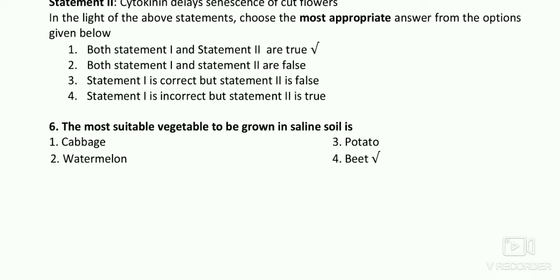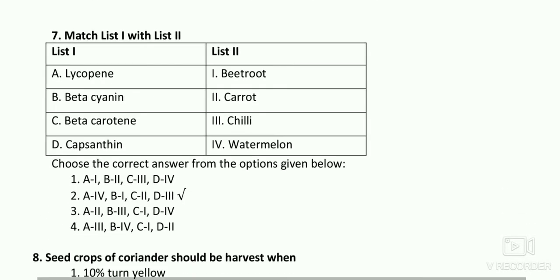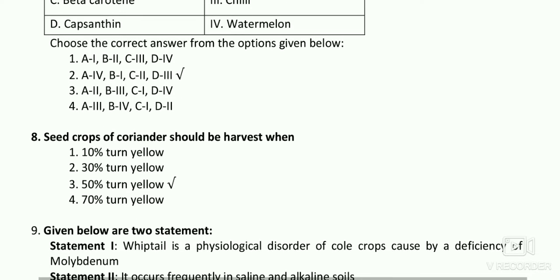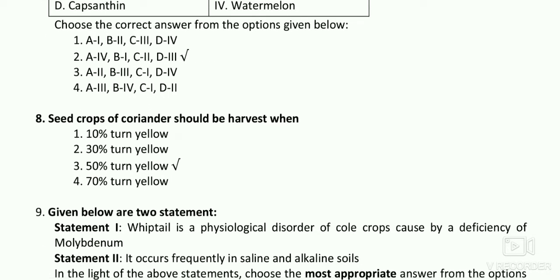The most suitable vegetable to grow in saline soil is a common question. For the matching question: lycopene — watermelon; beta-cyanine — beetroot; beta-carotene — carrot; capsanthin — chili. Another question: seed crop of coriander should be harvested when 50% of the crop turns yellow.